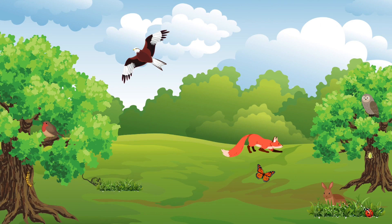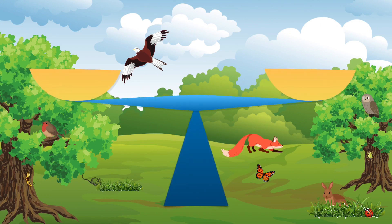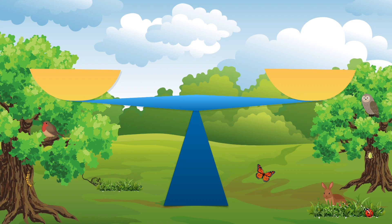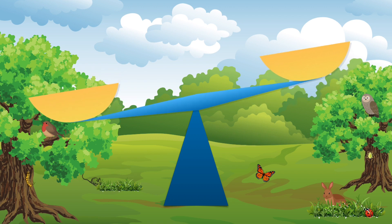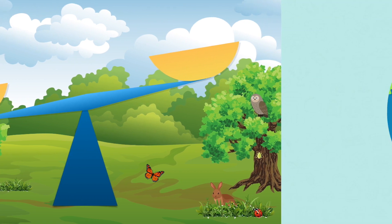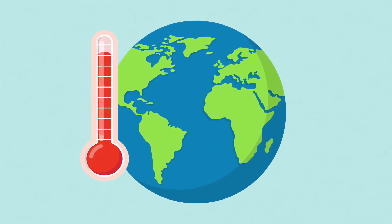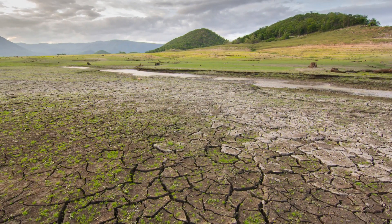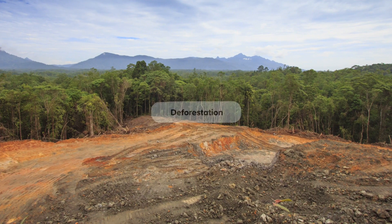Ecosystems must be delicately balanced to remain stable. This is known as being an equilibrium. Equilibrium can be disturbed by changes made to any part of an ecosystem, which will then go on to affect the other biotic and abiotic elements of the ecosystem, making it unbalanced. For example, human-induced climate change causes changes in temperature and precipitation, which will impact the plants and animals in an ecosystem. Deforestation reduces both nutrient input and protection for the soil, resulting in a lower quality soil for the plants in that ecosystem.